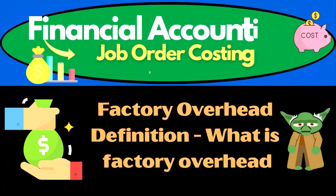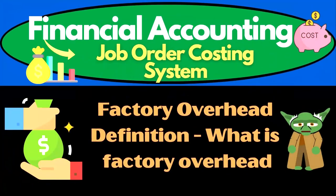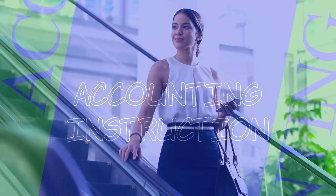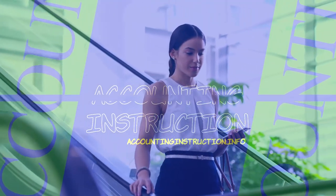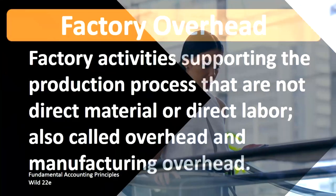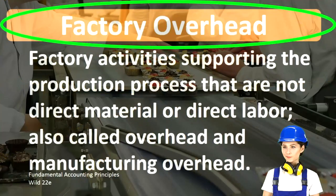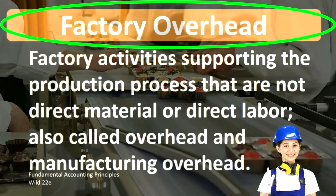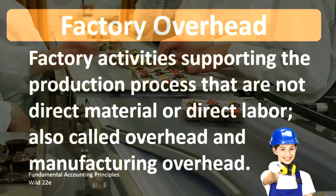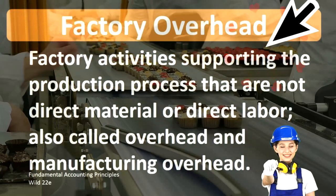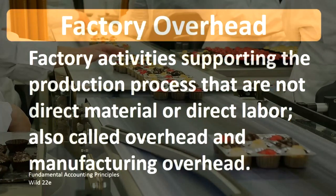In this lecture we will define factory overhead. According to Fundamental Accounting Principles, WILD 22nd Edition, the definition of factory overhead is factory activities supporting the production process that are not direct materials or direct labor, also called overhead and manufacturing overhead.